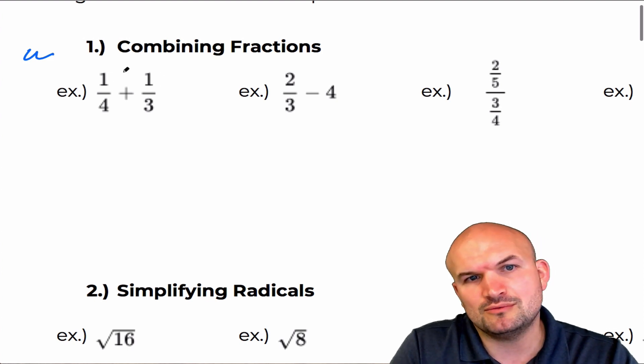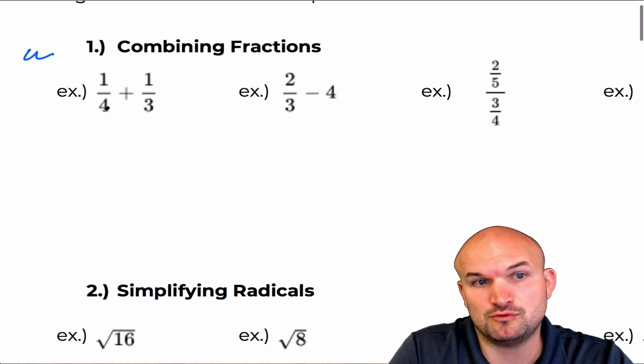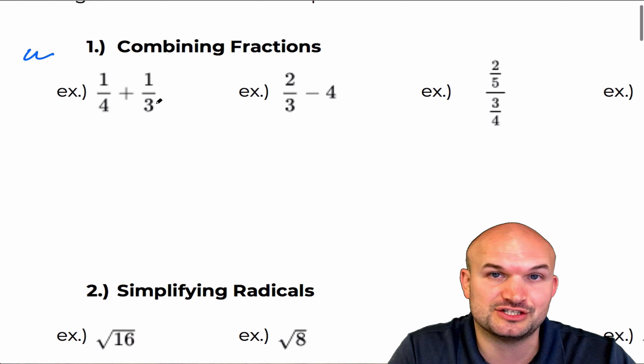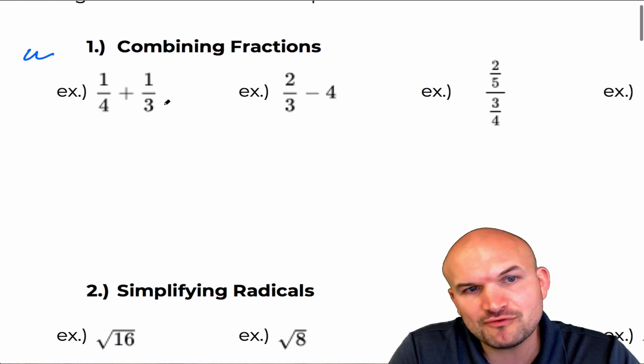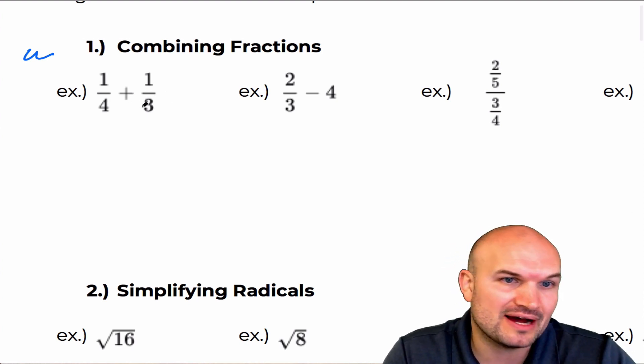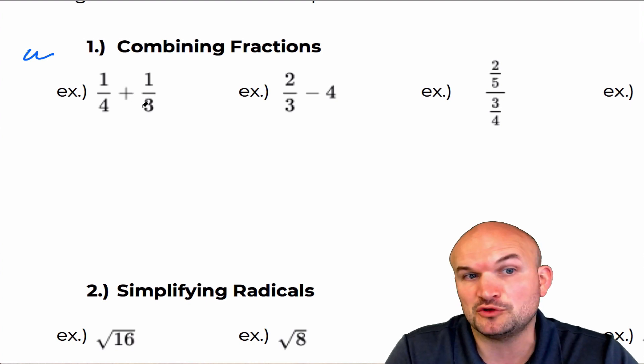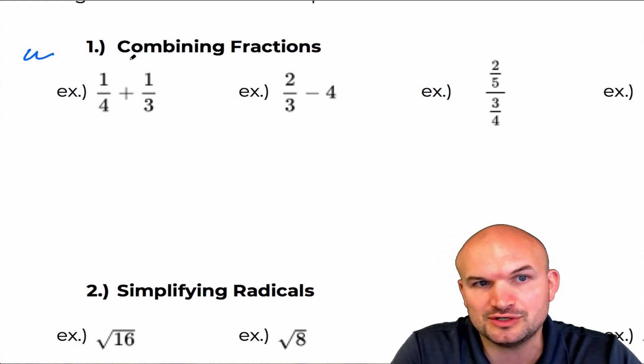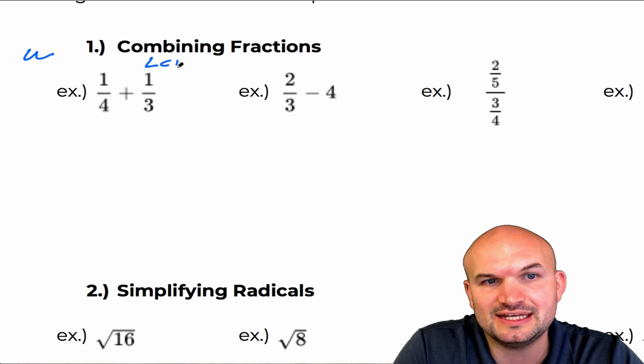So first of all, when we're looking into combining fractions here, I have one fourth plus one third. Remember the main idea when you're adding or subtracting fractions, you got to get a common denominator. And since four and three are not the same, we got to be able to identify what is the common multiple of both three and four. And you could list out your multiples, but hopefully at this stage in the game, you can recognize that the LCD in this case is going to be equal to 12.